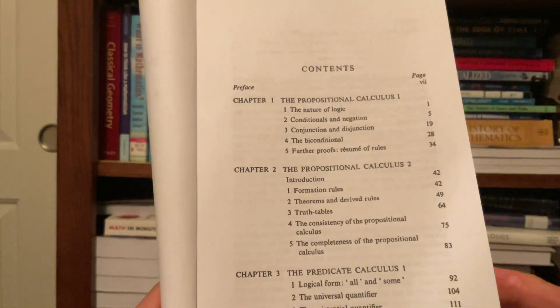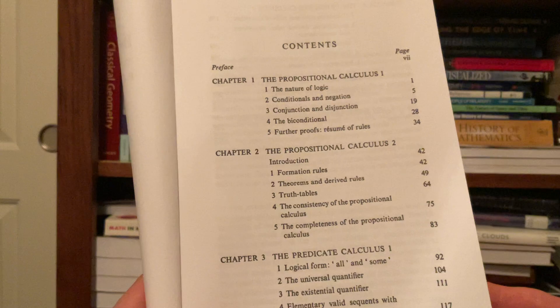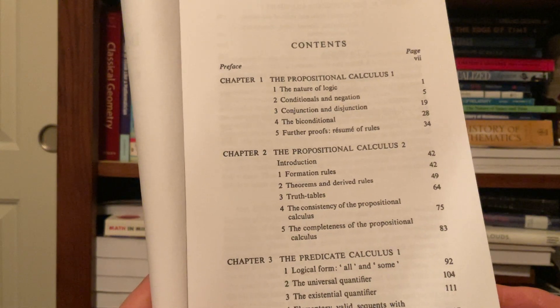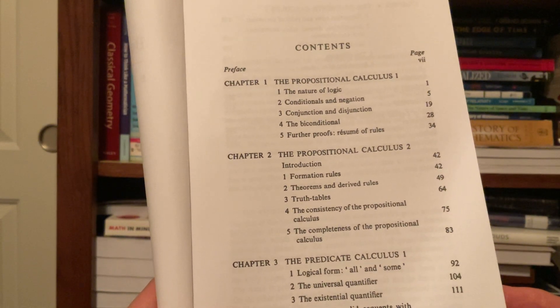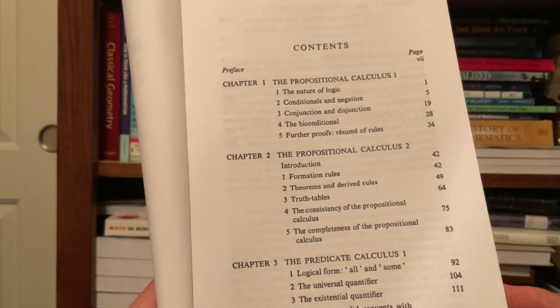So let's look at the table of contents. Chapter 1 is on the propositional calculus: the nature of logic, conditionals and negations, conjunctions and disjunctions, the biconditional, and further proofs.